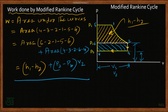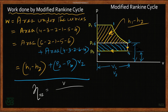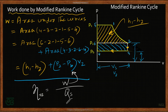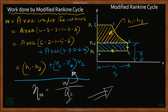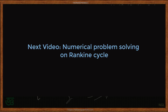Similarly, we can calculate the efficiency of the modified Rankine engine cycle as work output divided by heat supply Qs. The heat supply Qs remains the same as before, but the work output is the modified value. This concludes our discussion of the modified Rankine engine cycle.